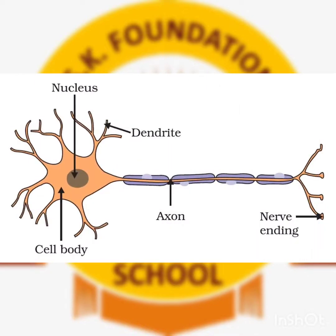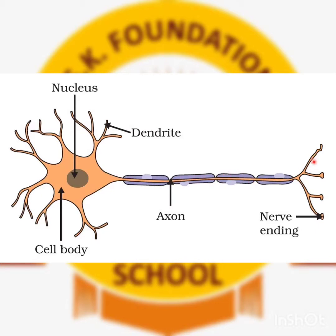Now we look at the diagram of the nerve cell. The skin-colored part is the cell body, or cytone. Inside the cytone, the skin-colored material is cytoplasm and the central part is the nucleus. The hair-like structures are dendrites, which receive signals. The thin thread-like structure is the axon, and the round purple formations along it are the myelin sheath. At the end of the nerve cell is the nerve ending.